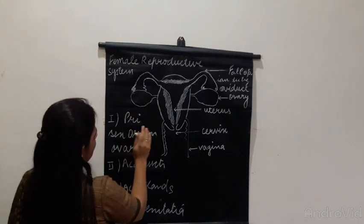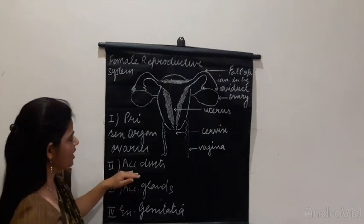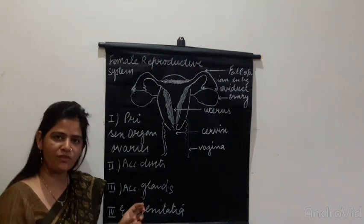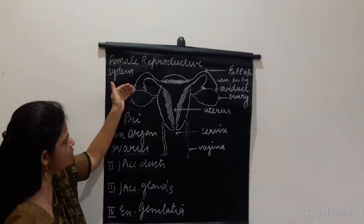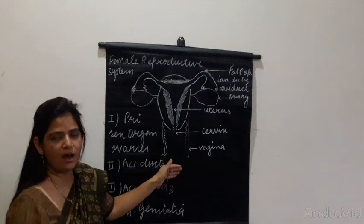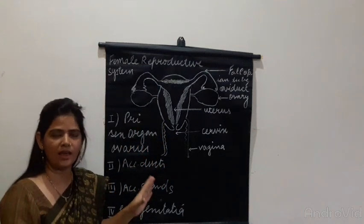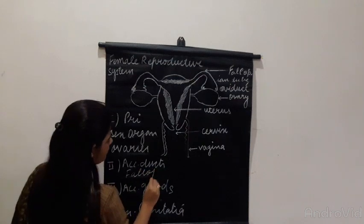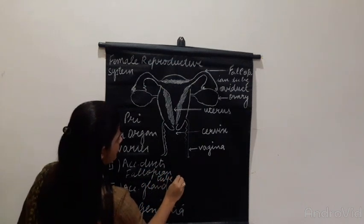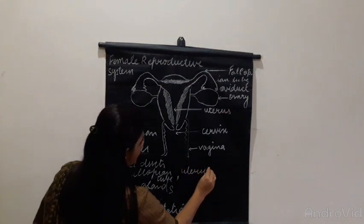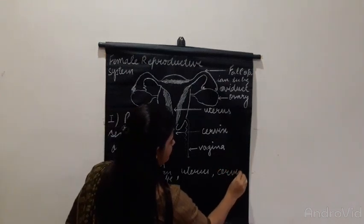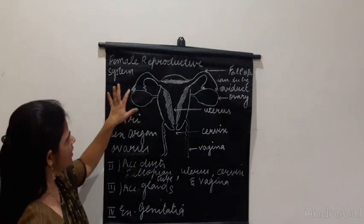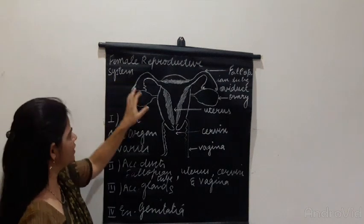Next, after the ovaries, we will talk about the accessory ducts. There are some ducts which are fine and some are broad. Right from the fallopian tube to the uterus, the cervix and vagina — all are ductile parts. So the accessory ducts include the fallopian tube, uterus, cervix, and vagina. This is the fallopian tube here.